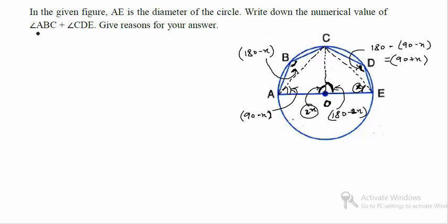So now, you have both these angles. Angle ABC in terms of X is 180 minus X and angle CDE in terms of X is 90 plus X. So if you add these two angles, this should always give you 270 degrees.